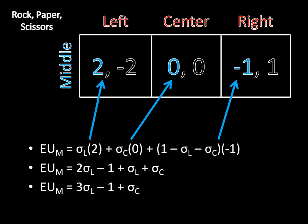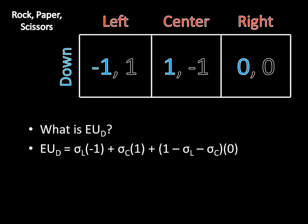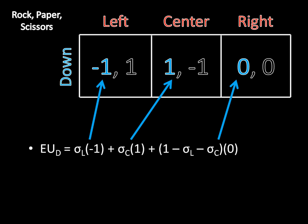Now we have just one last strategy for player one: we have to figure out his expected utility for down. With probability sigma-left, player one playing down will get negative one. With probability sigma-center, player two plays center and player one gets one. And with probability one minus sigma-left minus sigma-center, player two plays right and player one gets zero by playing down. This simplifies nicely: the expected utility for down equals negative sigma-left plus sigma-center.